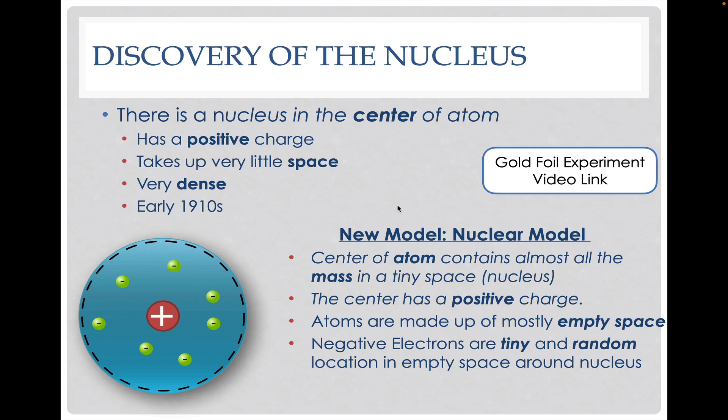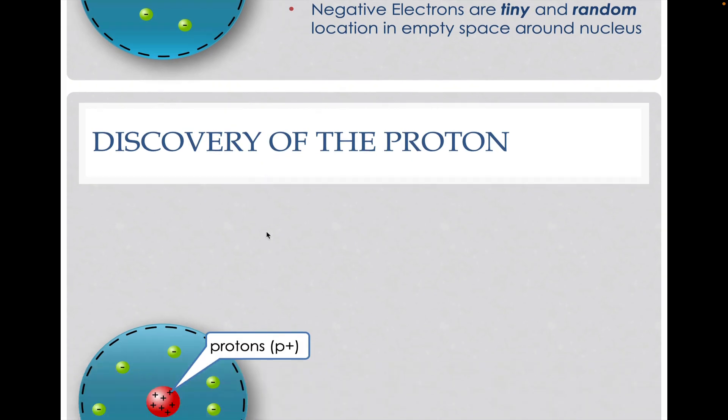From that, we created a new model called the nuclear model, which now included having this positive charge, tiny center core, where the atom contains that mass. We also now know that the outside area, or the electron cloud, is this space that is basically completely empty but those negatively charged electrons are inside of there.